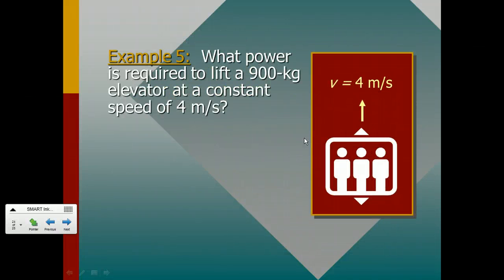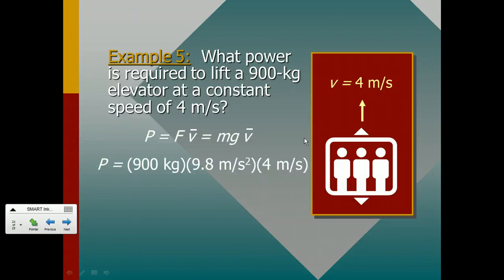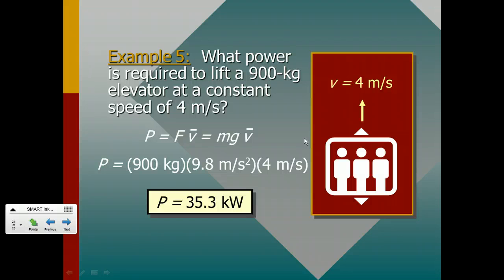So here is one final example. If we're asked what power is required to lift a 900 kilogram elevator at a constant speed of 4 meters per second, well, we know that this 900 kilogram elevator at a constant speed will require a force upward equal to its gravitational force. So our force then is going to be given by mg. Our velocity is 4 meters per second, and so the result is that it would require 35.3 kilowatts.